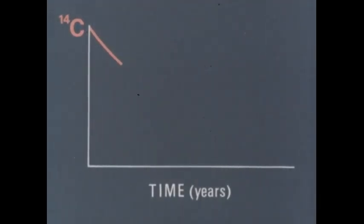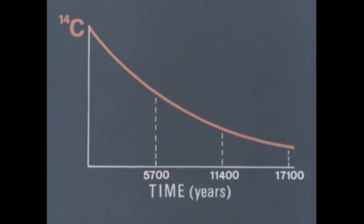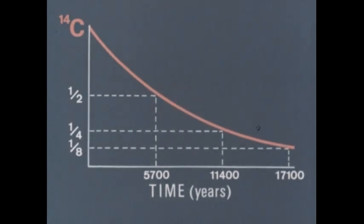Only half of them will be left after 5,700 years. And only half of that half will be left in another 5,700 years, and so on. 5,700 years is carbon-14's half-life. When we know what fraction of the original carbon-14 is left, we have an idea of how old the material is.